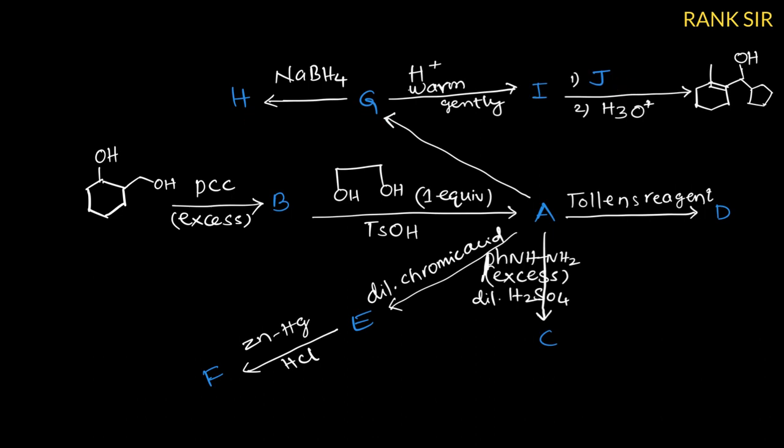So how to proceed this reaction first? We will start from here because we know what is the reactant and what is this reagent function. PCC oxidizes primary alcohol to aldehyde, secondary alcohol to ketone. Here excess is given, not one equivalent. So both primary and secondary alcohol oxidize and convert into aldehyde and ketone.